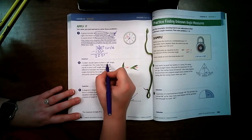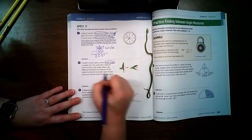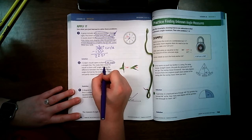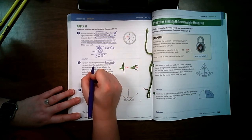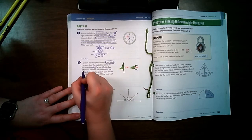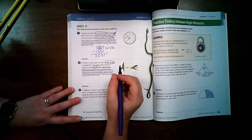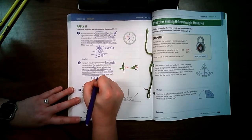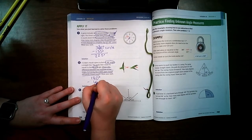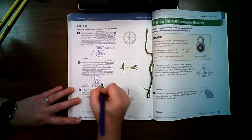A snake's mouth opens to form a 180 degree angle, a straight line. The snake then closes its mouth to form a 60 degree angle. What is the difference between the measures of the angles formed by the snake's open mouth and partly closed mouth? So we have 180 degrees minus 60 degrees equals 120 degrees.